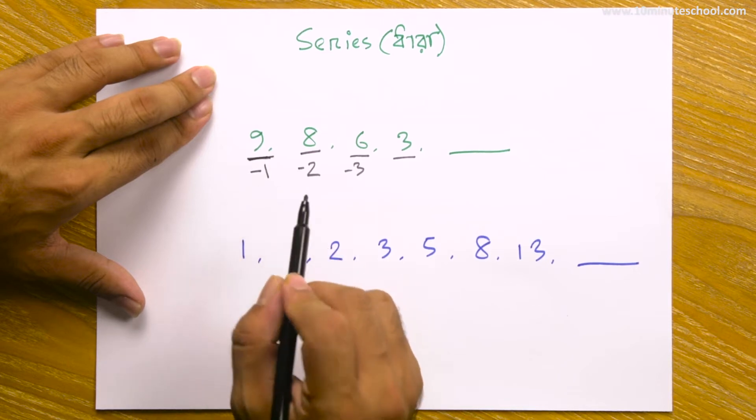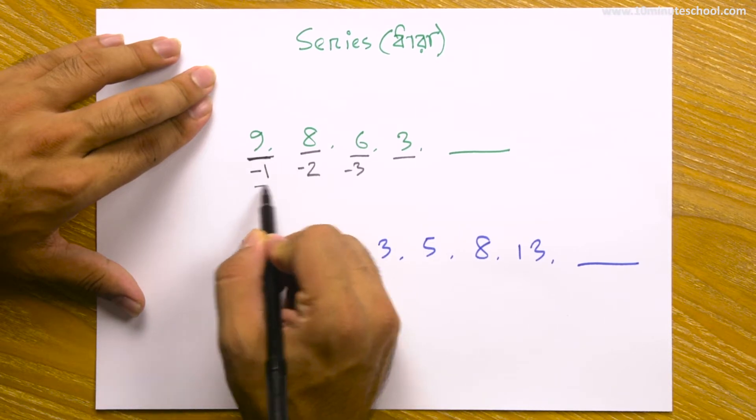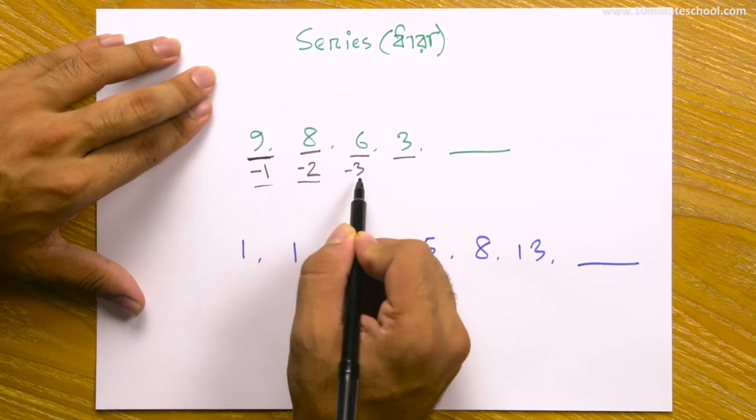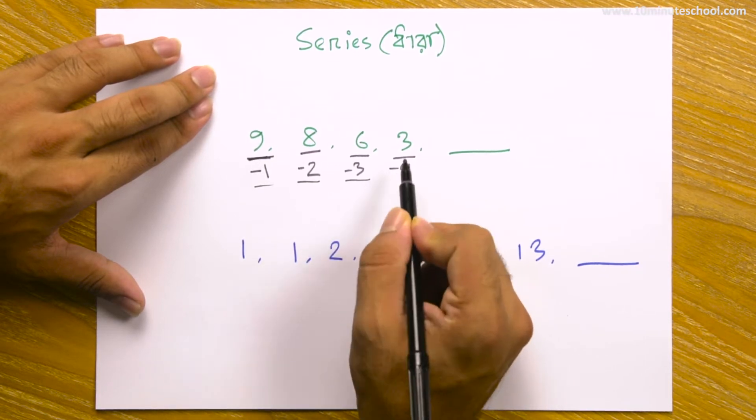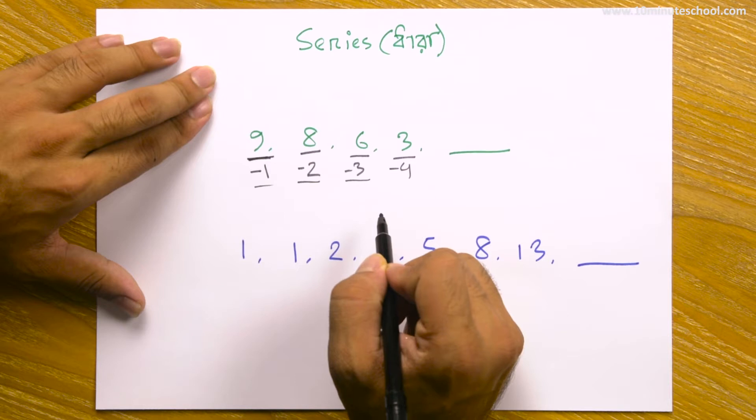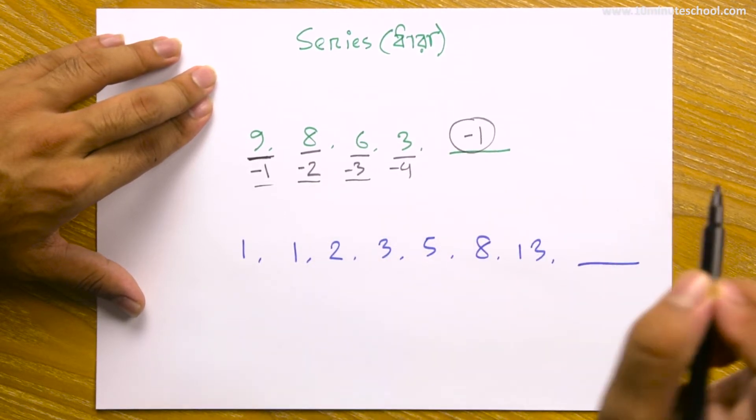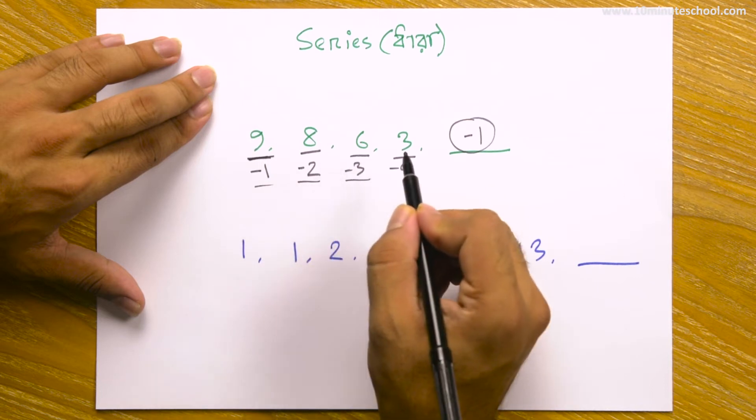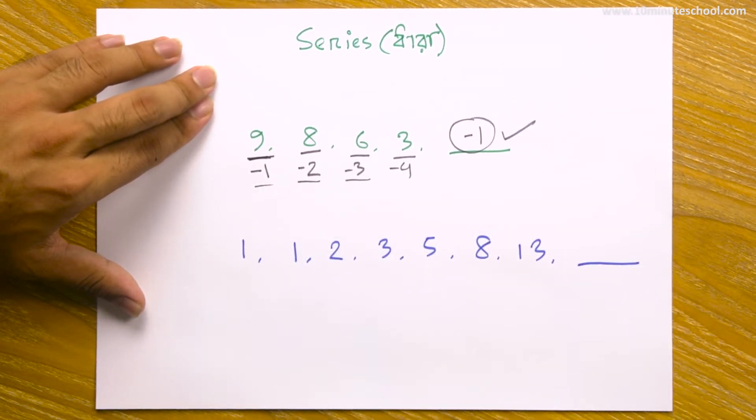Looking at the differences: minus 1, minus 2, minus 3. The next difference should be minus 4. So the pattern for 9, 8, 6, 3 is minus 1, minus 2, minus 3, minus 4. The answer is correct.